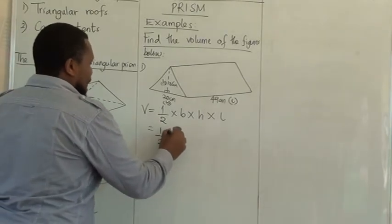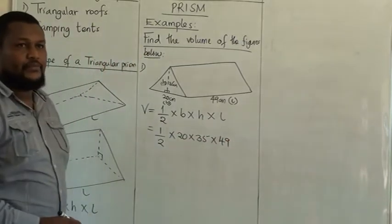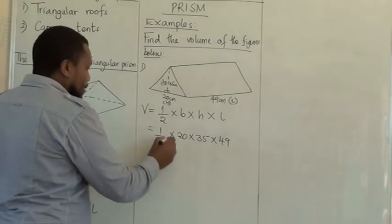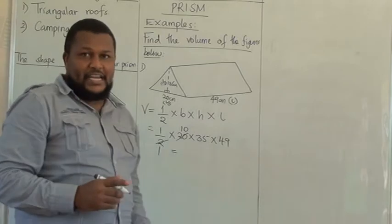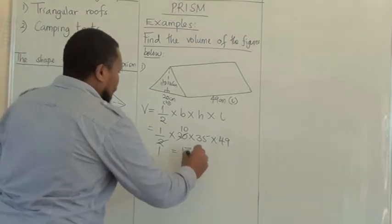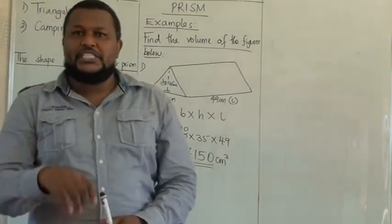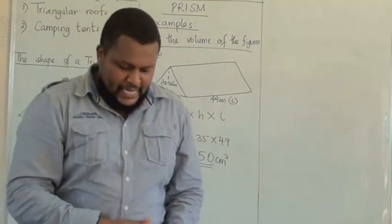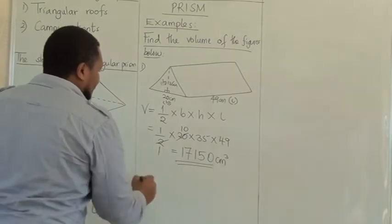I'll substitute and have a half times 20 times 35 times 49. We can simplify because 20 is divisible by 2, so by 2, 1, by 2, 10. Multiply 10 times 35 times 49. What are you getting? I know you will get 17,150 centimeters cubed. Remember, the units of volume is either centimeters cubed or meters cubed. Is this what you got? I believe you got that as the correct answer.